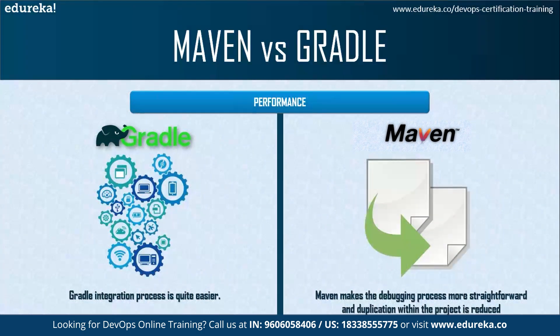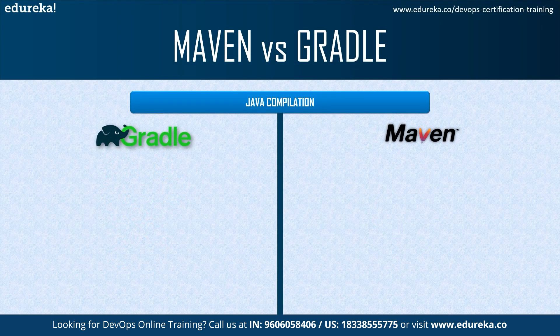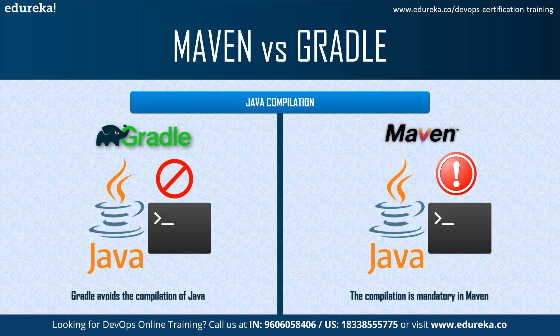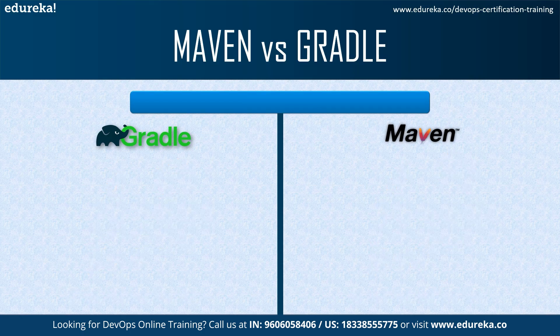Keep in mind that most of the negative features are going towards Maven because Gradle is an advanced and enhanced version of Maven. Speaking of Java compilation, Gradle avoids mandatory Java compilation while Maven compulsorily needs a Java compilation — because Maven was primarily built for Java while Gradle is a multi-language build automation tool.